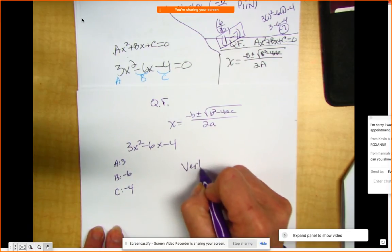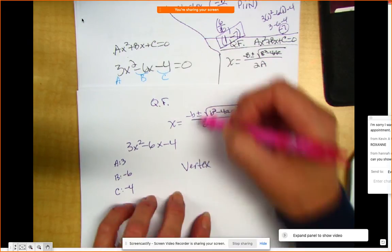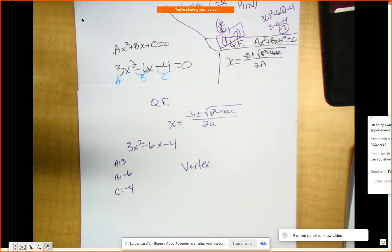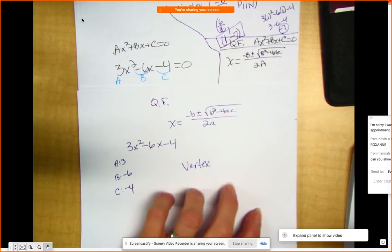To find the vertex, it's this simple. As long as you can remember this formula, x equals opposite of b plus or minus square root of b squared minus 4ac divided by 2a.